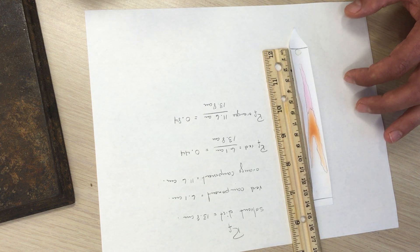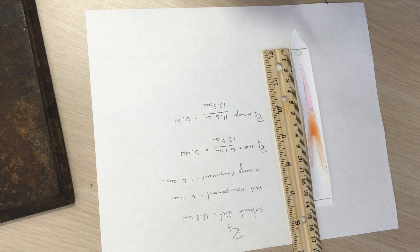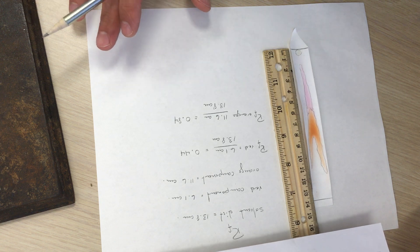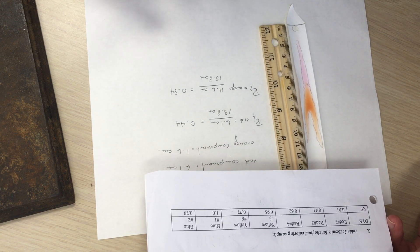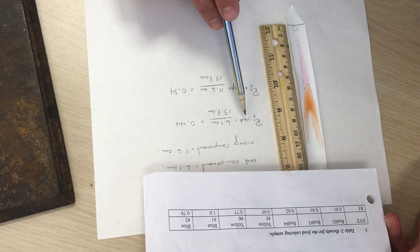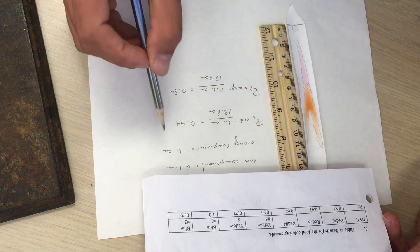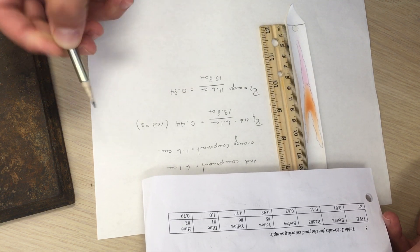So now that we've identified that the Skittles dye was a mixture, the next part of the lab was to see if it corresponds to one of the given food dyes. And we have for the red, red number three as a possible candidate for that.